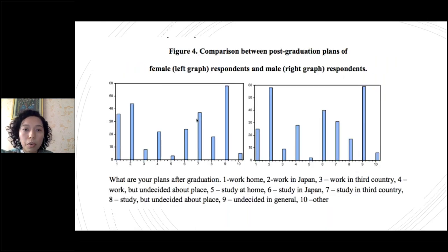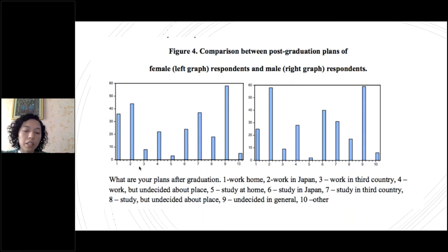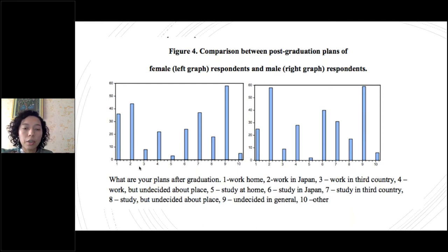Here we can see the difference between female and male respondents. The female respondents are on the left and male on the right. Looking at columns two and six, more male respondents said they are planning to stay in Japan, while more female respondents said they are planning to work at home. This could be explained with many different aspects — gender and migration has been a very interesting topic — and there is a specific trend among Asian students related to culture and possibly other things.